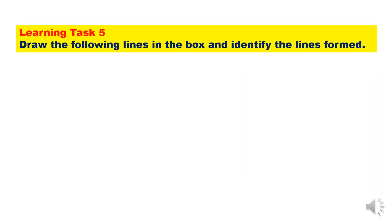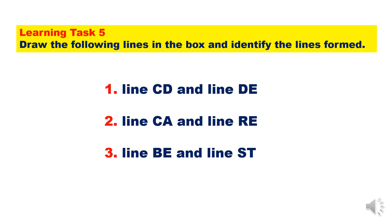For Learning Task 5, draw the following lines in the box and identify the lines formed. Number 1 — line CD and line DE. Number 2 — line CA and line RE. Number 3 — line BE and line ST.